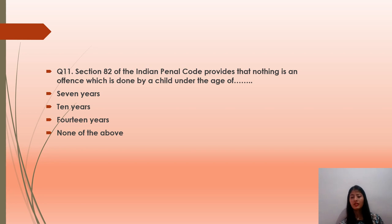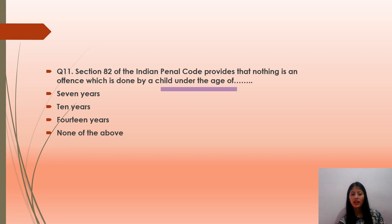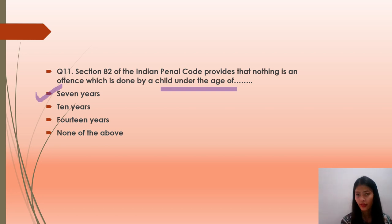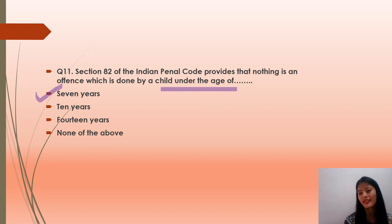Question number 11: Section 82 of IPC provides that nothing is an offense which is done under the age of — option A: 7 years; option B: 10 years; option C: 14 years; option D: none of the above. The correct answer is option A — 7 years. Section 82 of IPC clearly states that nothing is an offense which is done by a child under 7 years of age.